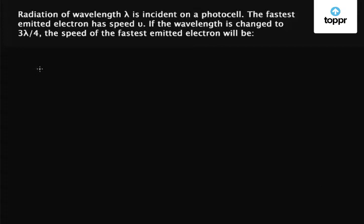Let's take a problem on modern physics. Radiation of wavelength λ is incident on a photocell. The fastest emitted electron has speed v. If the wavelength is changed to 3λ/4, the speed of the fastest emitted electron will be: